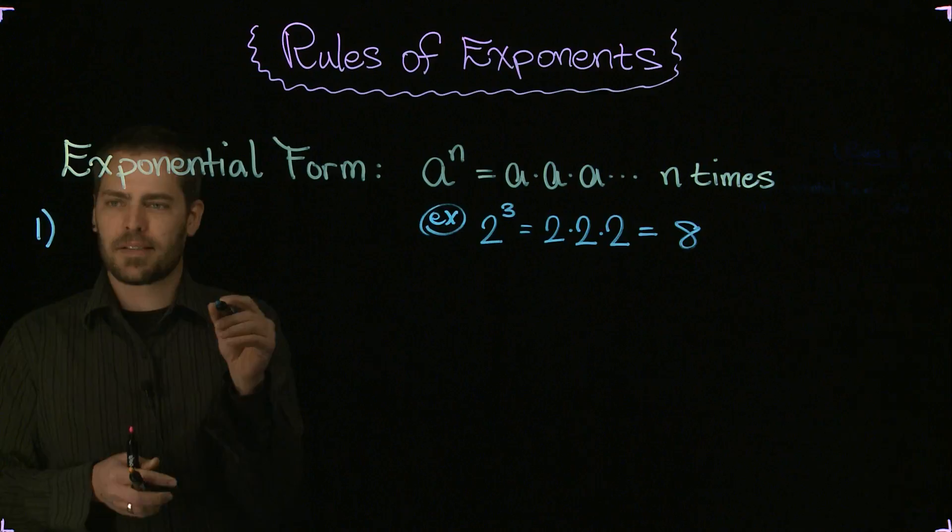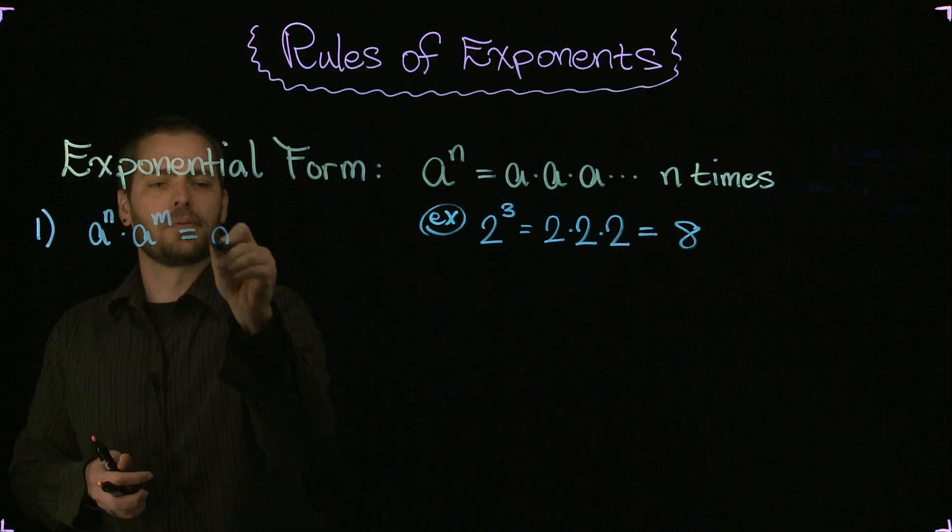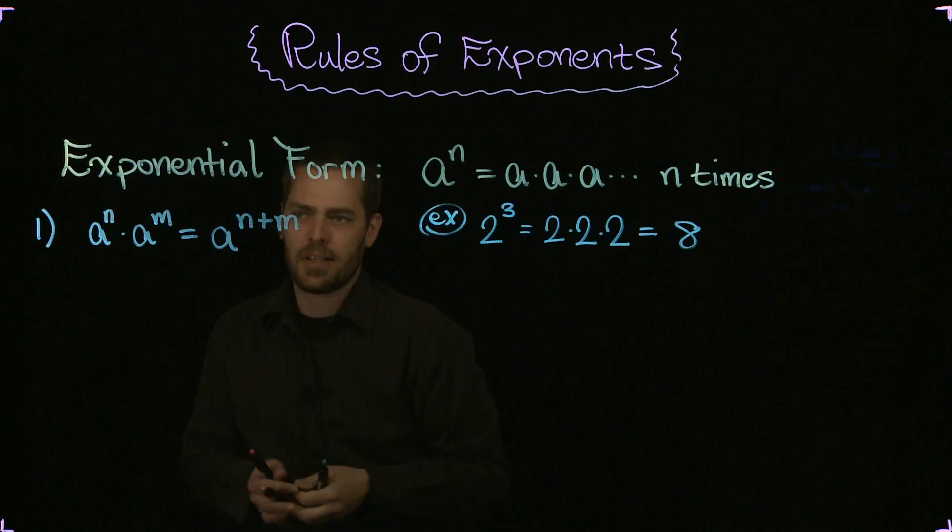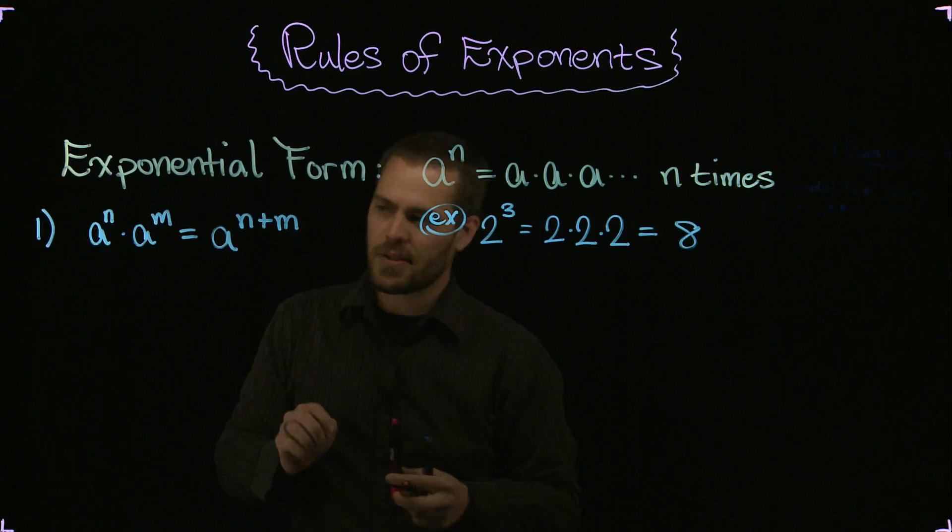Here is rule number one. This isn't a standard rule number one, it's just the first one I'm thinking of. a to the n times a to the m is equal to a to the n plus m power. So it turns out that if you expand this first exponential expression and you multiply it by this second exponential expression, that would be the same thing as if you added the exponents together.